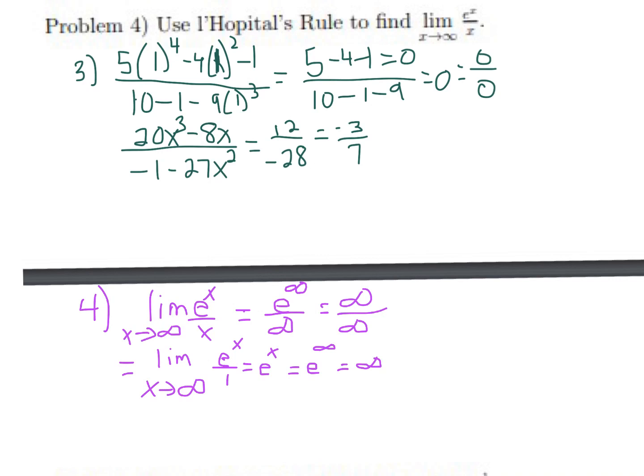e^x never dies — it's always its own derivative. Without a chain rule or any other part of the function, we'd be applying L'Hôpital's rule forever without getting anywhere. So we hang up our hat and say the limit does not exist.